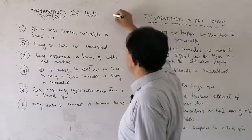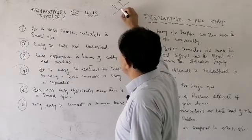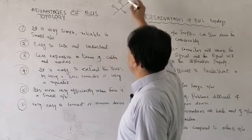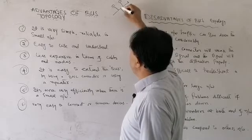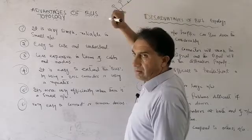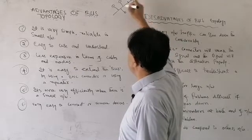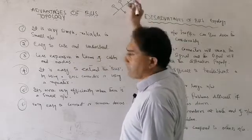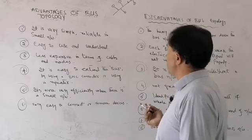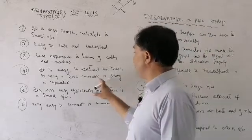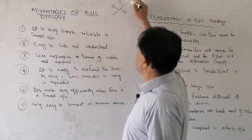For example, this is the main cable with two systems attached. If we want to extend this network, we use a BNC connector here and attach another cable segment with three or four more systems. So it is very scalable.